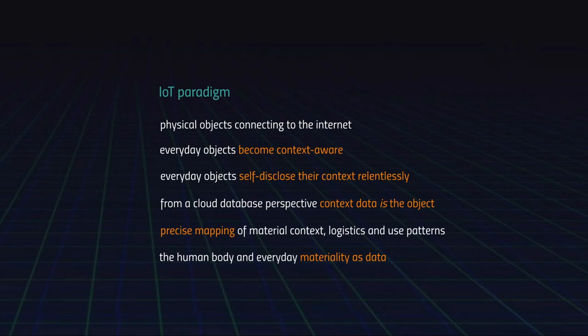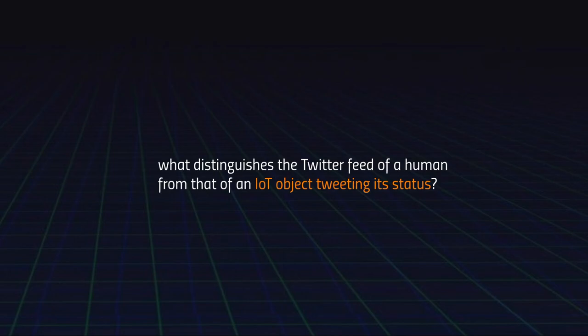So: objects are connected to the internet, they are context aware, they self-disclose context relentlessly. From the perspective of the internet, context data is the object — it allows precise mapping of space, logistics, and patterns — and everyday materiality, including the human body, is data. Knowing all of this and having that cartoon in mind, here is a question: what distinguishes the Twitter feed of a human from that of an Internet of Things object tweeting its status? Keep in mind that the Twitter feed here is a semantic interface for humans — a simplified example because the real question is what distinguishes the data feed of a human from that of an object.